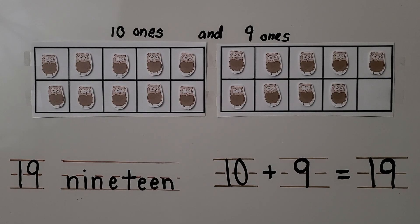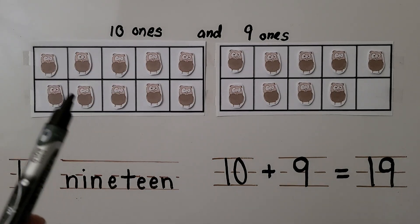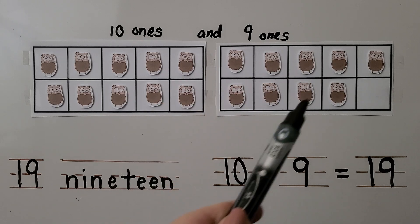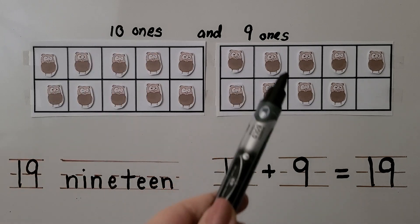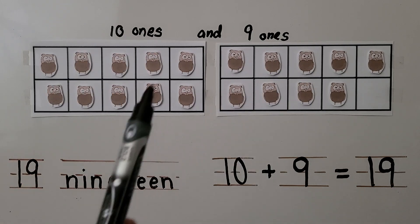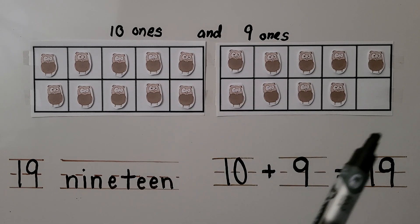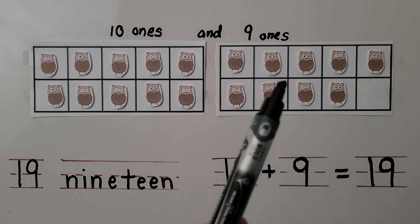Here we have 2 ten frames and some owls. There are 10 owls in the first frame. There are 9 more owls in the next frame. There are 10 ones and 9 ones. There are 19 owls. 10 plus 9 is equal to 19. We know there's 19 when there are 2 ten frames and 1 counter is missing. We have a 10 and 9 more.